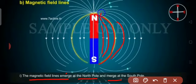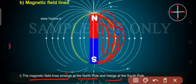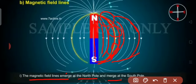You can see the magnet and how the direction is showing. The magnetic filings around a magnet can be observed by sprinkling iron filings around them. Now you can see the direction. So north and south — these lines are called the magnetic field lines. They emerge, meaning they start at the north pole and merge, meaning they end at the south pole.